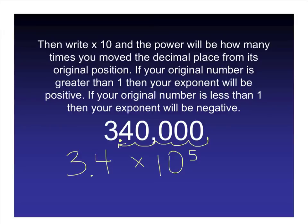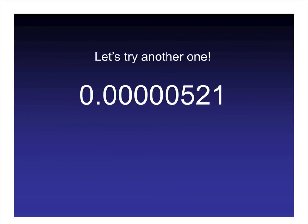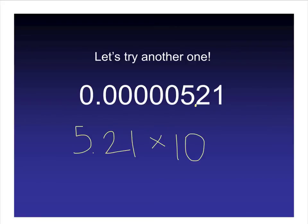For another example with a small number, place the decimal point to get a number between 1 and 10 — that gives 5.21. The original decimal place is given, and counting the places moved: 1, 2, 3, 4, 5, 6 places. Since the original number is less than 1, the exponent is negative, giving 5.21 × 10⁻⁶.